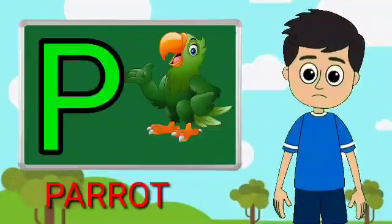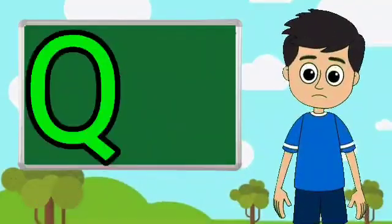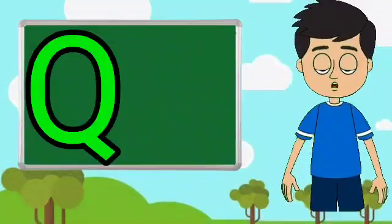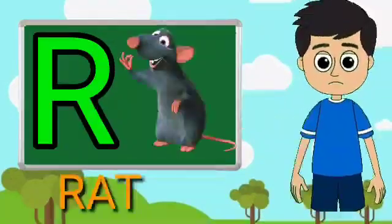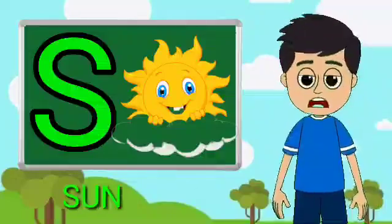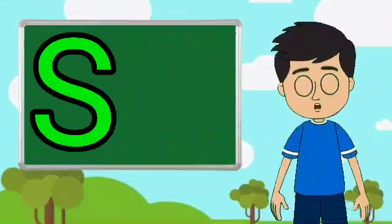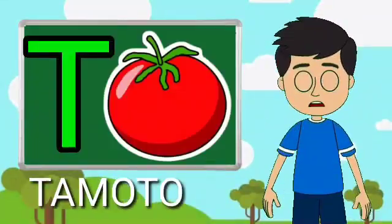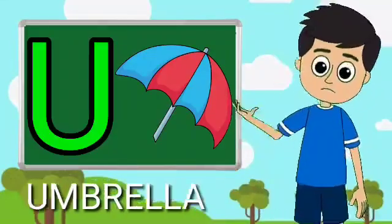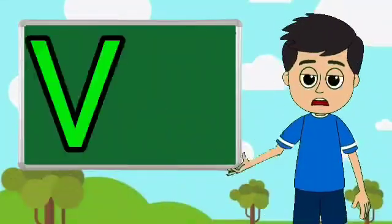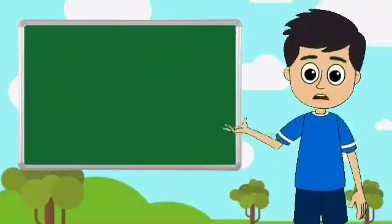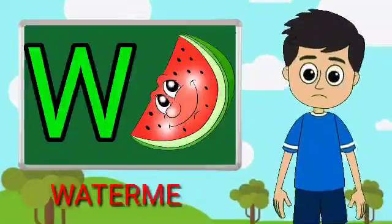E for parrot, U for tune, R for rat, S for sun, E for tomato, U for umbrella, E for band, W for watermelon.